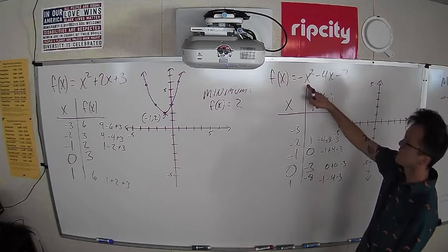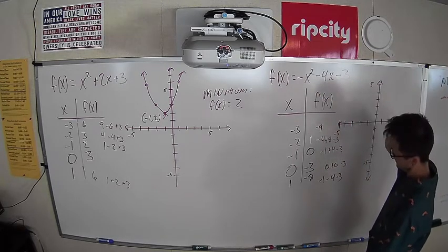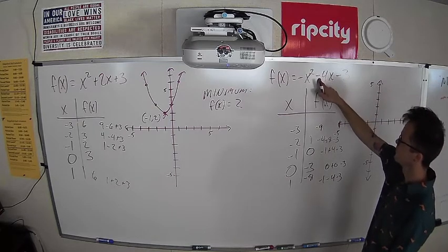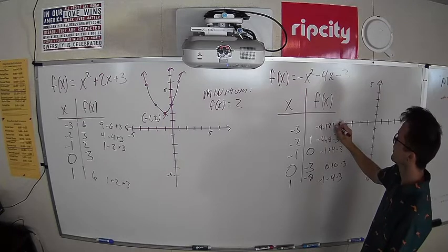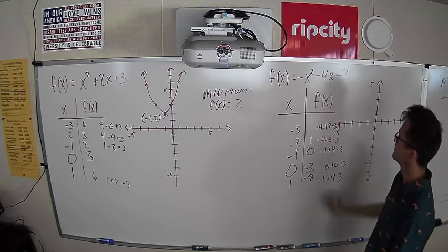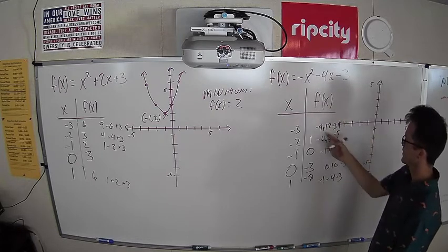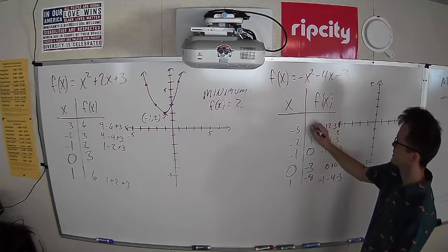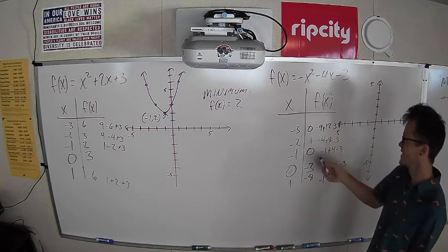Negative 3 times negative 3 is positive 9, but it's going to be negative because of that negative sign. 4 times negative 3 is negative 12, but it's a negative negative, so we're adding 12. Minus 3. Negative 9 plus 12 is 3, minus 3 is 0. We might have found a turnaround point!